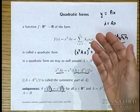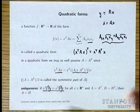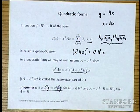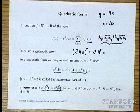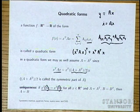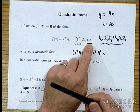If A is diagonal, what does that mean about the quadratic form? In Y equals AX, a diagonal A means y_i depends only on x_i with no cross-coupling. In a quadratic form, a diagonal A means it has only squares — it's a weighted sum of squares with no cross terms x_i * x_j where i is not equal to j.